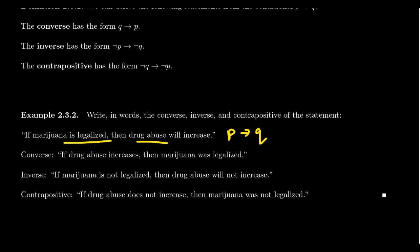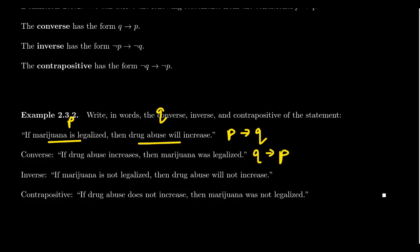It's not too hard to see why increased drug abuse is probably the case to some extent, though I'm not making a precise statement about that. This original statement is probably true from common sense. Now consider the converse, which swaps the roles of premise and conclusion. The original was P implies Q — marijuana is legalized implies drug abuse increases. The converse is Q implies P — drug abuse increase implies marijuana was legalized.